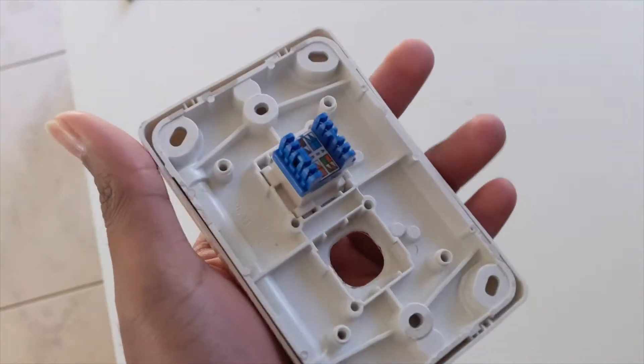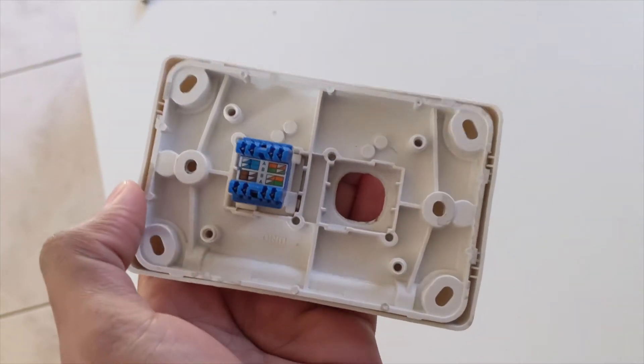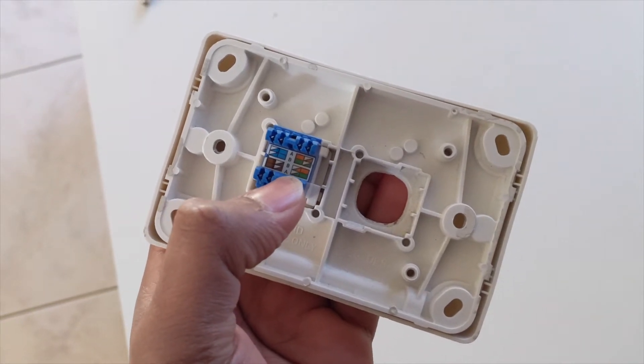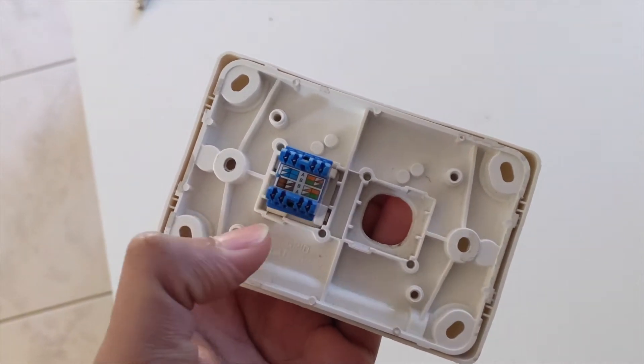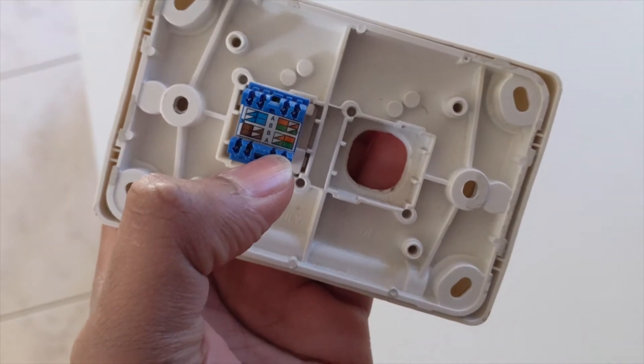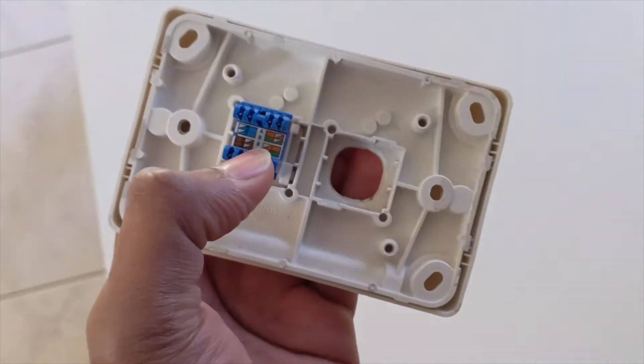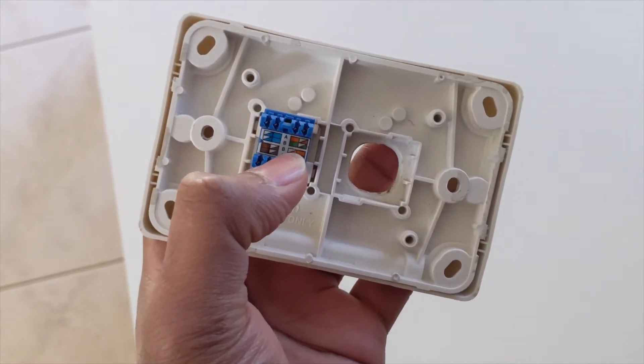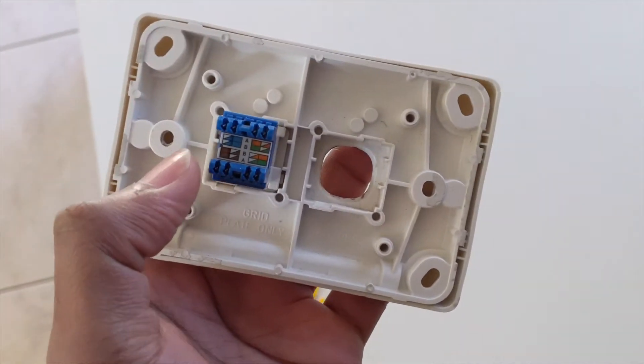When you're installing an Ethernet wall outlet like this, you'll see a color code named ABBA. I went through lots of tutorials and saw that most people use the B version of this color code.